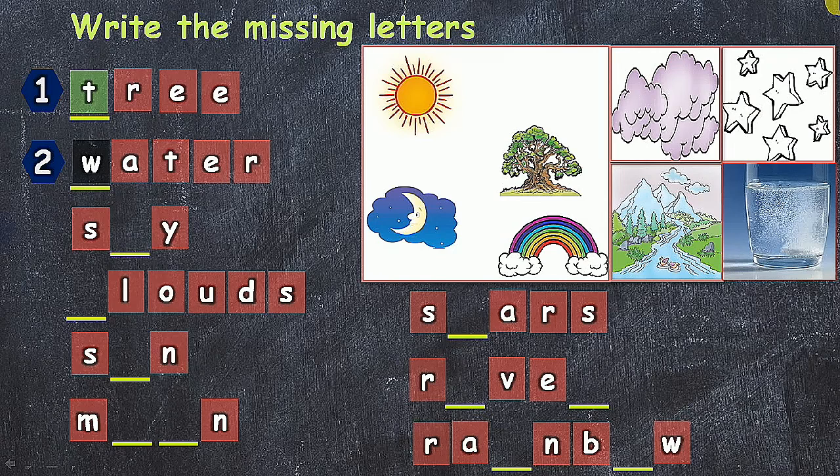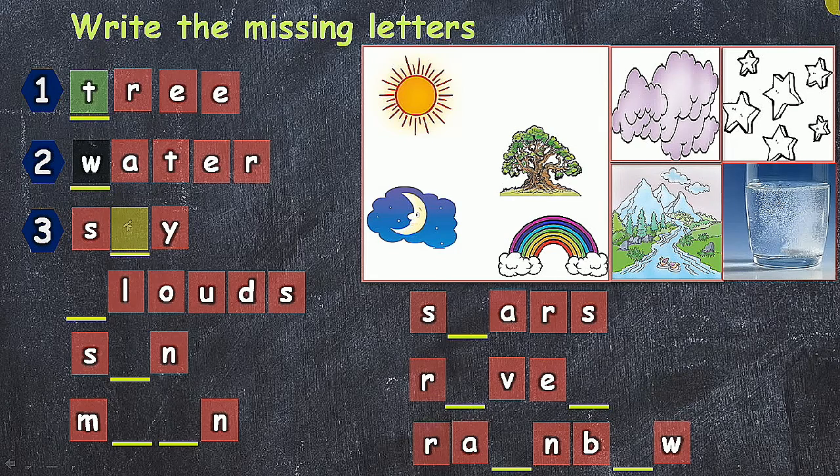And then third one, this is sky. In this third one, K is the missing letter. S-K-Y, sky.